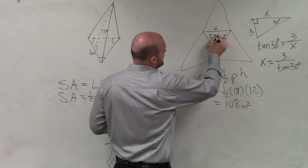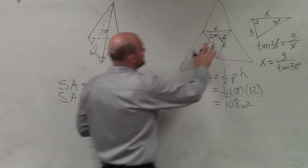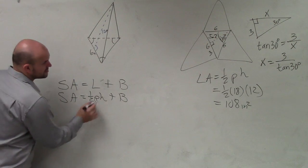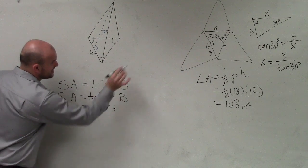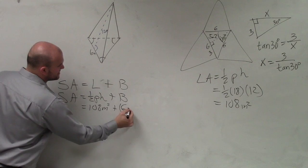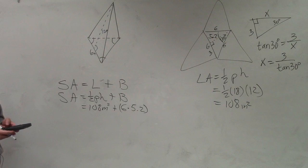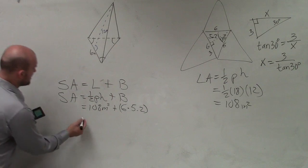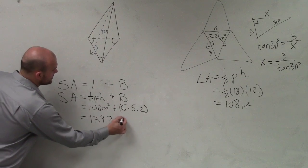So therefore, this distance is 5.19. To find the area, or let's just round that to 5.2. Now, to find the area of that, so we know the lateral surface area is 108 meters squared plus the area of the base, which is going to be 6 times 5.2. So now I do 6 times 5.2, and then add that to 108. And my final surface area is 139.2 meters squared.